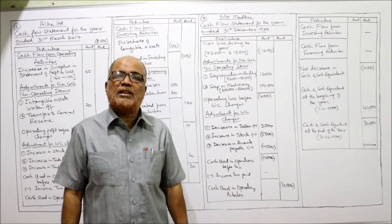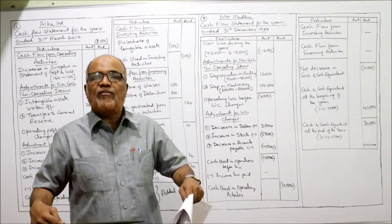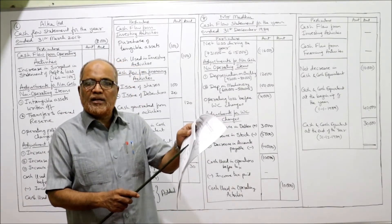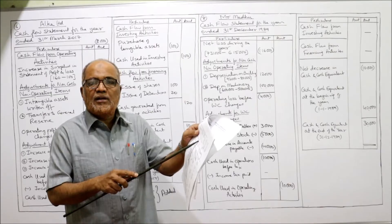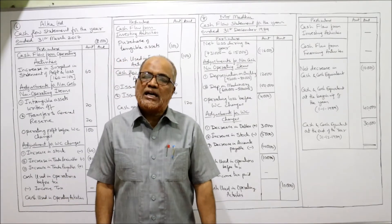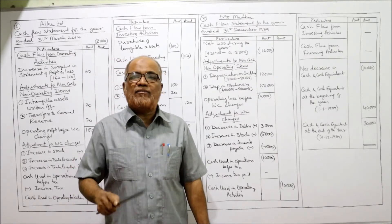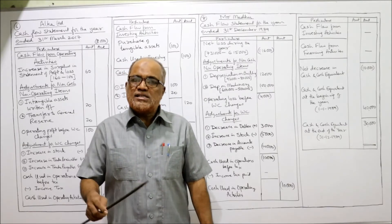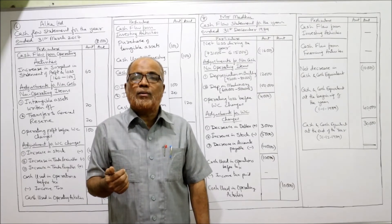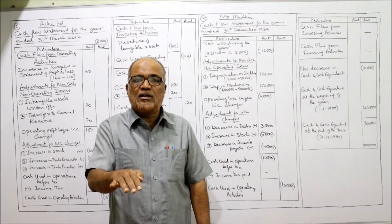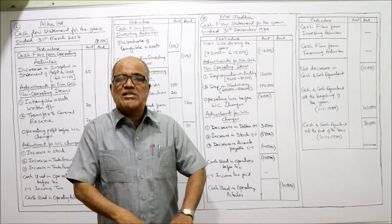In a sole trading concern, profit is added to capital and drawings are deducted. Drawings are the amount withdrawn by the owner for personal use. The profit increases the capital; a loss decreases the capital. If capital decreases, there are two reasons: either a loss in the business, or the owner withdrew money (drawings), which also decreases capital.